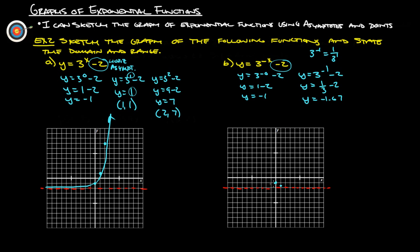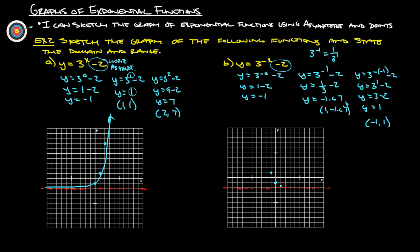Now it looks like it's going to flatten out to the right. Let's see what happens when we put in x equals negative one. So y equals three to the negative of negative one, minus two — that's y equals three to the first minus two, so y equals three minus two, which is one. So the point (−1, 1) is on the graph. The negative exponent just makes the graph go down and to the right.